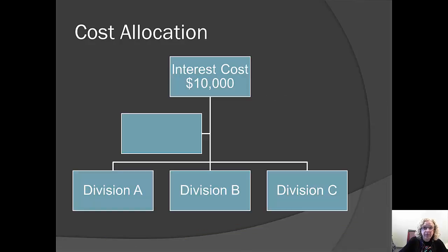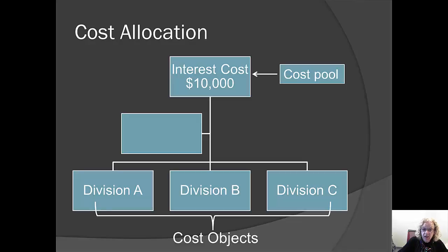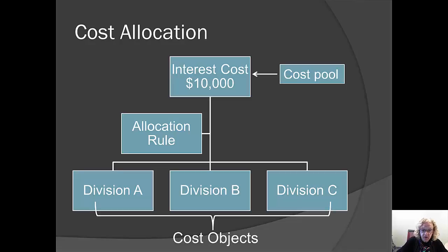Let's look at a schematic of this problem. We have $10,000 of interest costs — that's our cost pool — and we're trying to assign those interest costs to our three divisions, which are our cost objects. Now we have to decide how to do that, so we need some kind of allocation rule. For example, we could simply say there are three divisions, take the interest, divide by three, and assign a portion to each division.